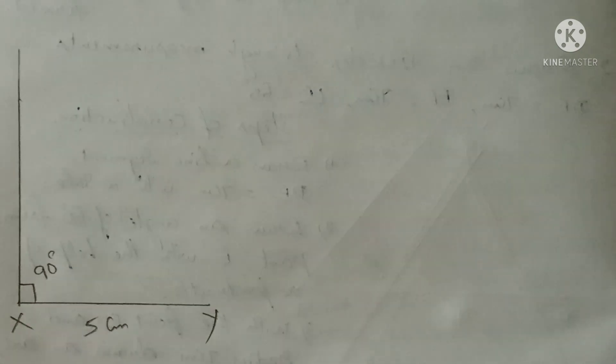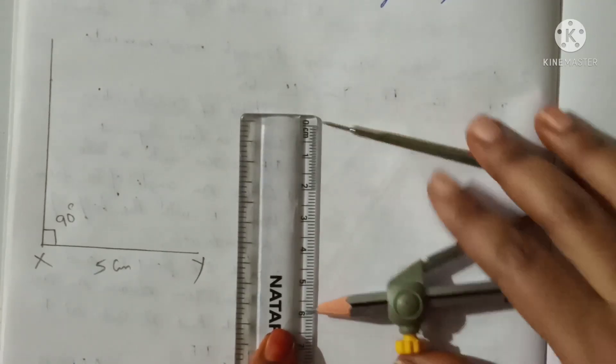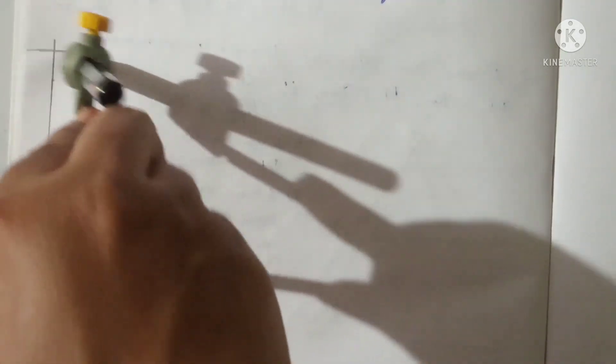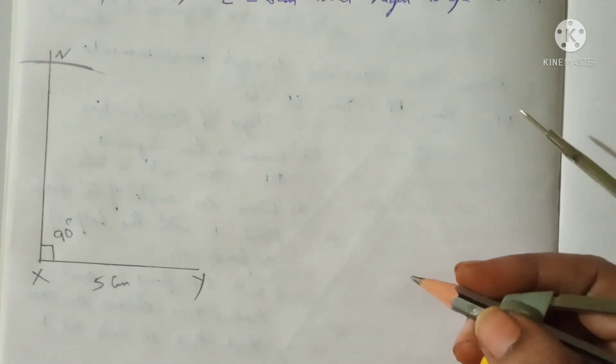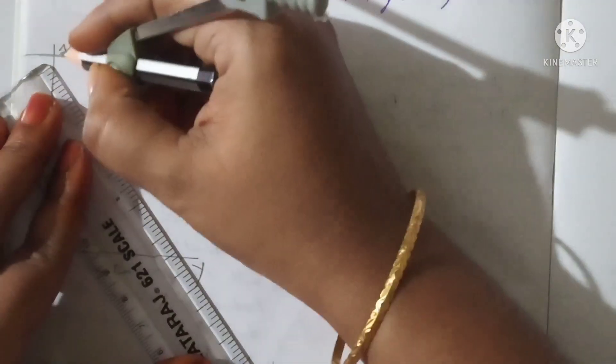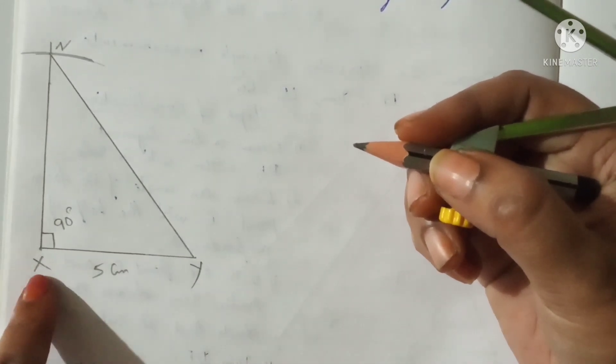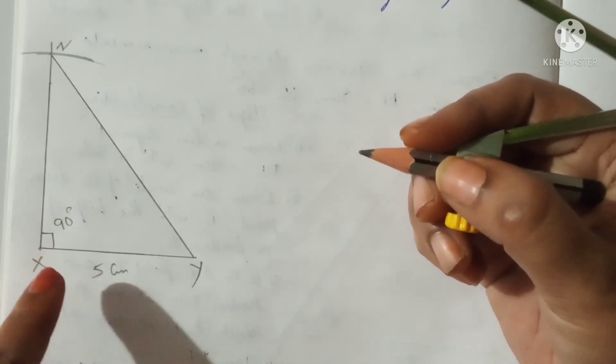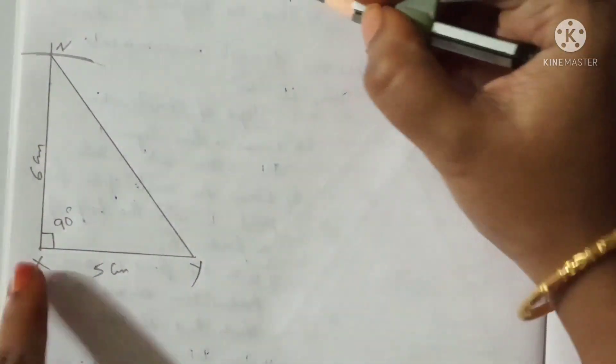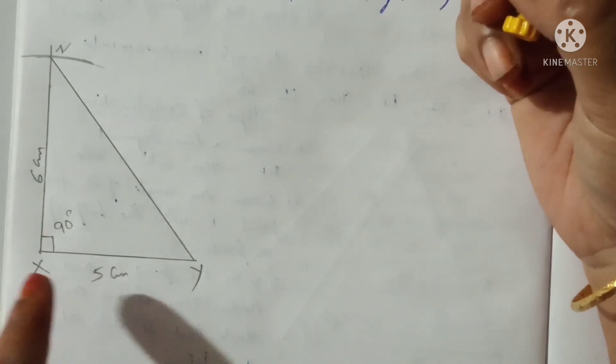Since XZ equals 6 centimeters, take a compass with a radius of 6 centimeters. Place it at X and draw an arc. The arc cuts the ray at a point — that point is called Z. Now join Z and Y. The triangle is formed, with angle X equal to 90 degrees, XZ equal to 6 centimeters, and XY equal to 5 centimeters. Thus the required triangle XYZ is formed.